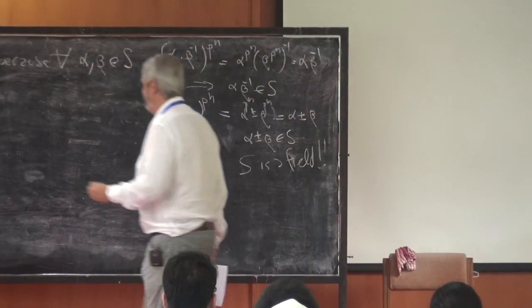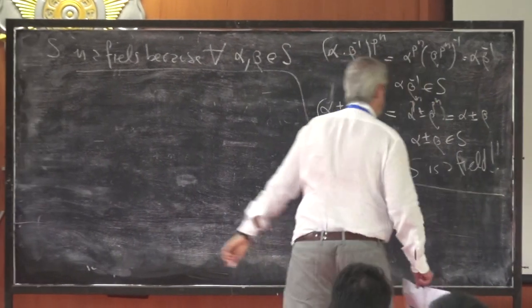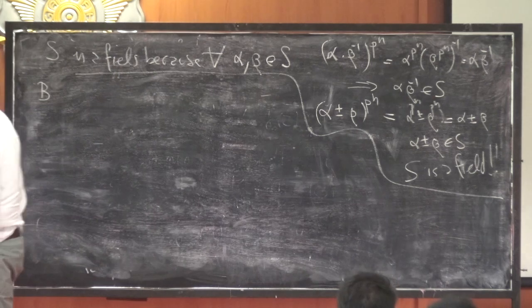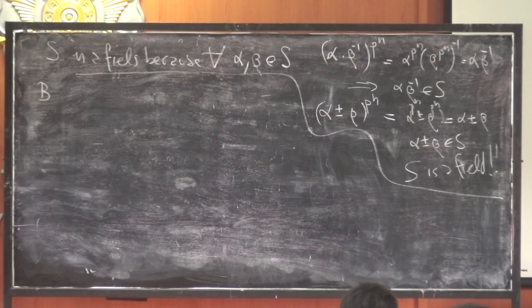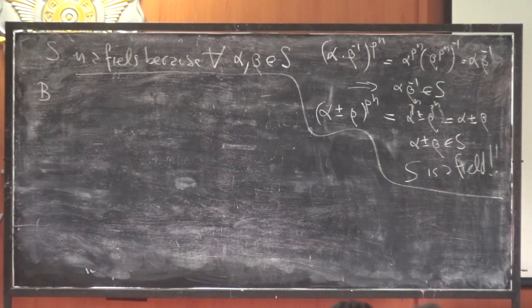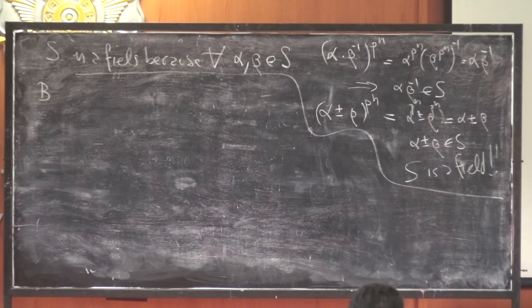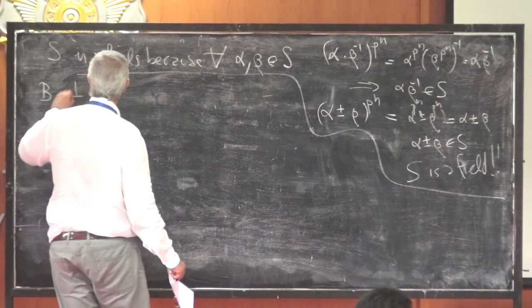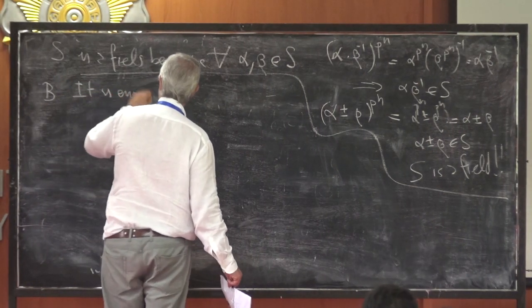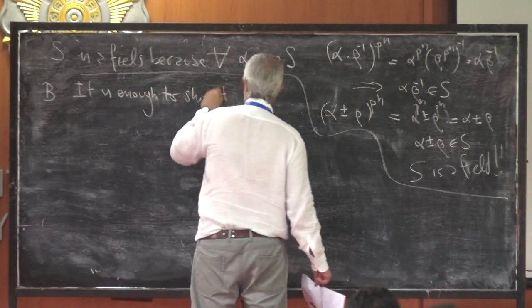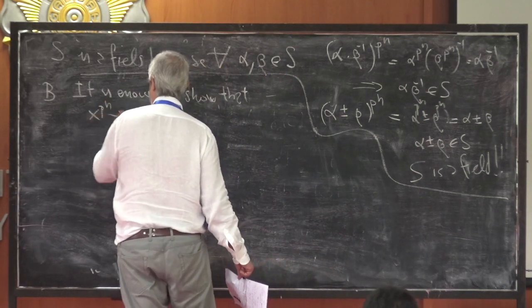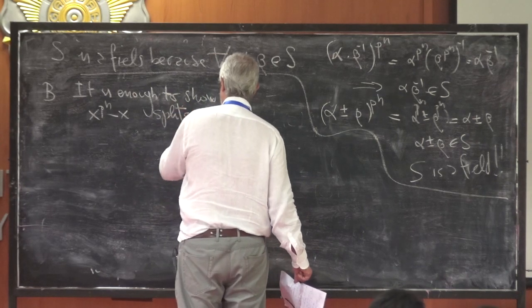That completes the proof of A. For task B, we want to prove that any finite field F with p^n elements is a splitting field for x^(p^n) - x. We already know the splitting field has p^n elements, so F has the correct size. It is enough to show that x^(p^n) - x splits in F — equivalently, that for every beta in F, beta^(p^n) = beta.